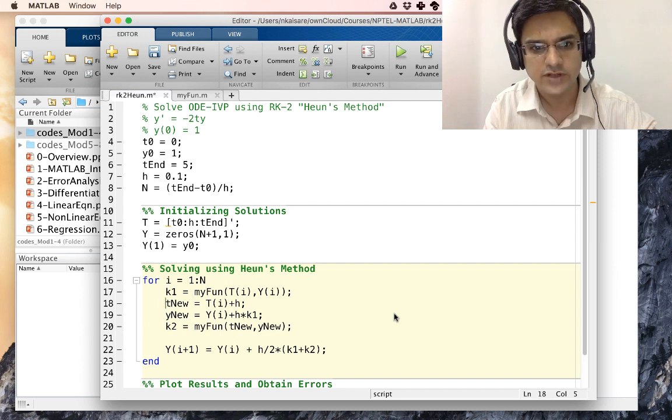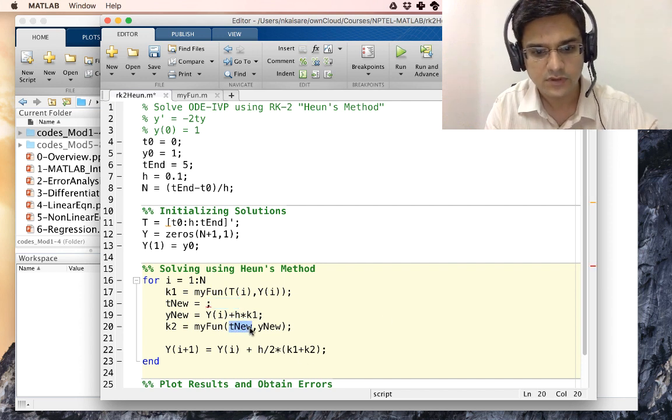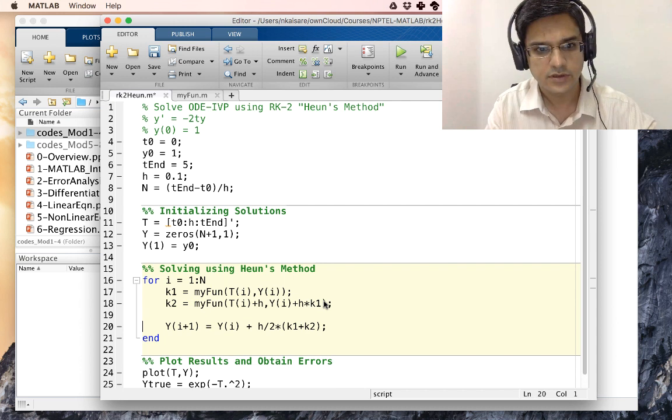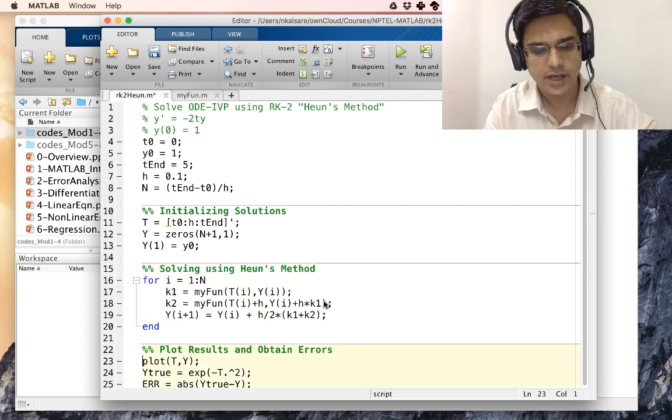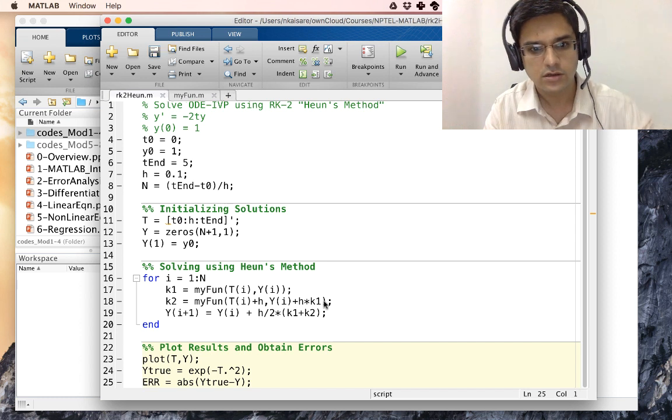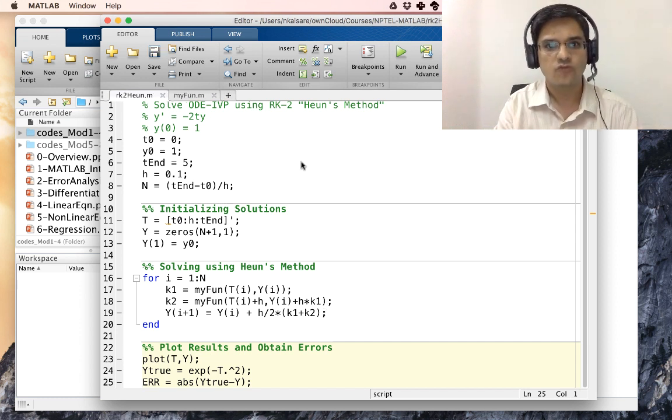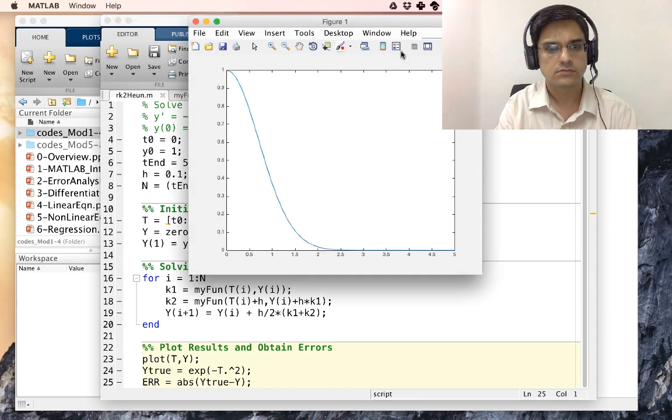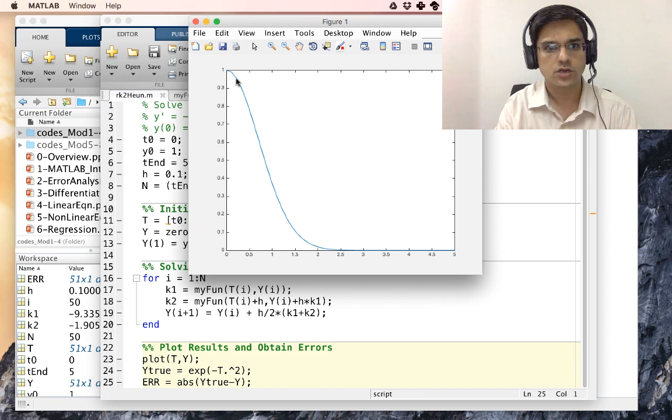So I will just remove this and directly replace t nu with t i plus h and I will replace y nu with y i plus h k1. And this becomes our rk2 Heun's method which uses the function MYFUN. Let us save this and let us run it. And it shows the overall curve which looks exactly similar to what we had earlier.